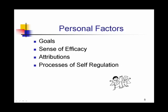Personal factors are considered the cognitive aspect of the theory, and they include the internal workings of the individual: the goals that individual has, their sense of efficacy — which is their belief about their competence or effectiveness in a given area — attributions, which are a person's belief about what causes their success or failure, and self-regulation, which is the ability to plan, monitor, and control distractions.